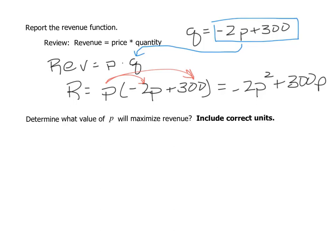It asks us in the next part to determine what value of P will maximize the revenue. Our revenue function, which we just found in the previous question, is negative 2P squared plus 300P.